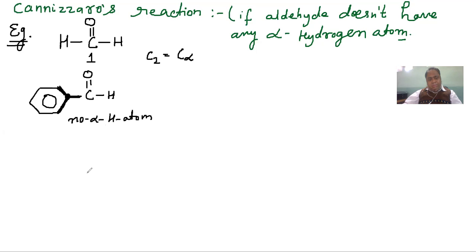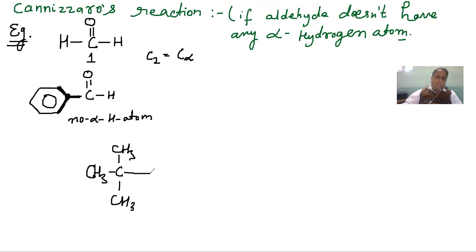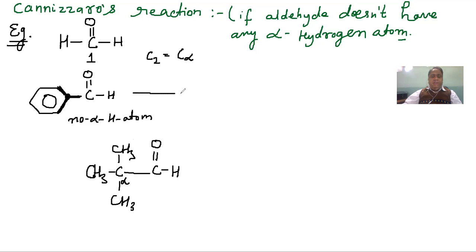Similarly, if you take the molecule (CH3)3CHO — that is, 2,2-dimethylpropanal — you will find there is no alpha hydrogen atom either. Although the adjacent carbon is the alpha carbon, the substituents on it are methyl groups, not hydrogen atoms; those are beta hydrogen atoms. So these kinds of molecules, if treated with base, undergo a disproportionation reaction.